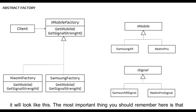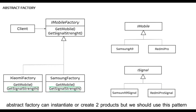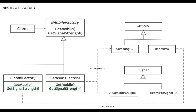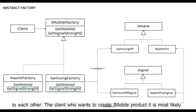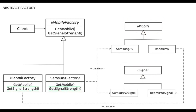If we map the diagram to real-world objects it will look like this. The most important thing to remember is that Abstract Factory can instantiate two products, but we should use this pattern only when those products are related or dependent in some way. For instance, in our example, getMobile and getSignalStrength are related — a client who creates an iMobile product will most likely also need to create an iSignal product for that same mobile. Let's hop over to Visual Studio to see the implementation.